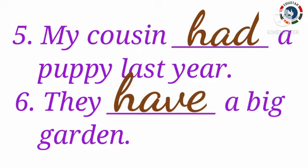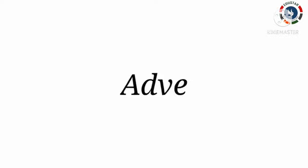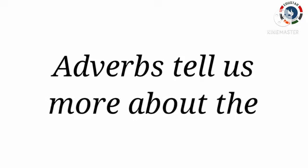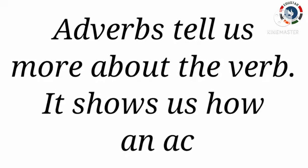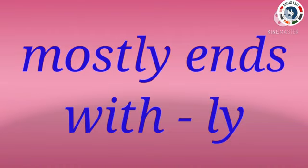I hope you all are clear about having verbs. Next, I am going to recall adverbs. Children, an adverb is a word that tells us more about the verb. It shows us how an action is done. That means, words that tell us how an action is done are called adverbs. Adverbs give extra information or more meaning about a verb. We usually form adverbs by adding -ly to adjectives. So mostly adverbs end with -ly.